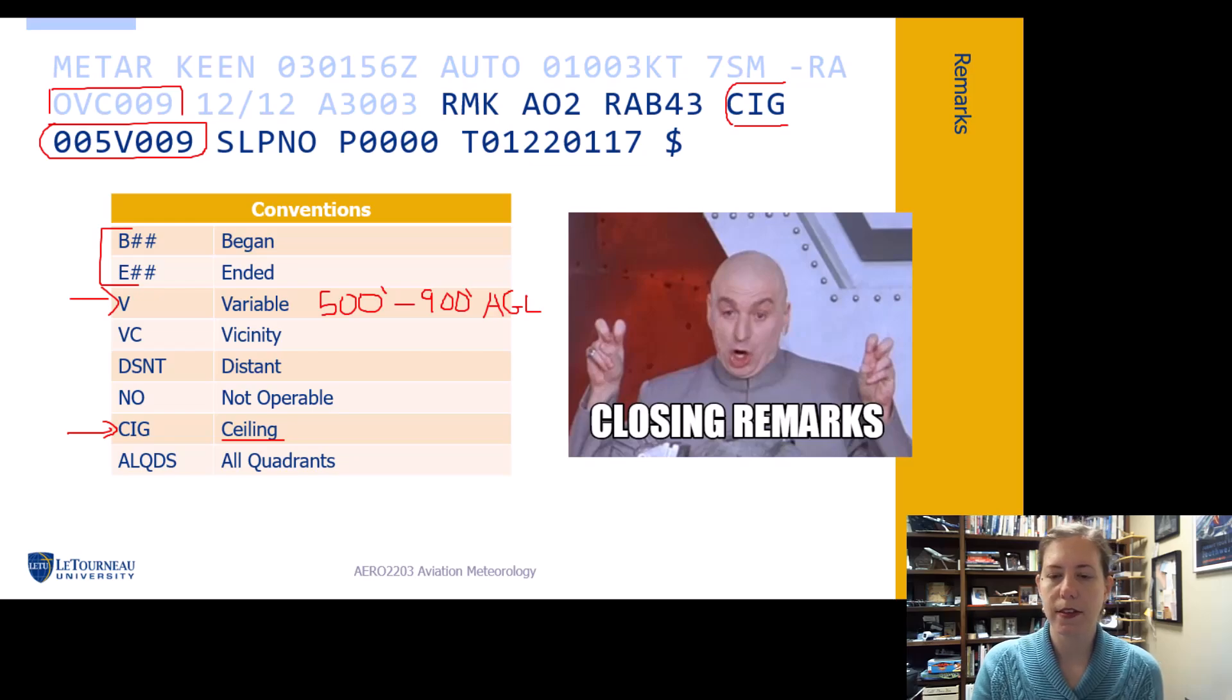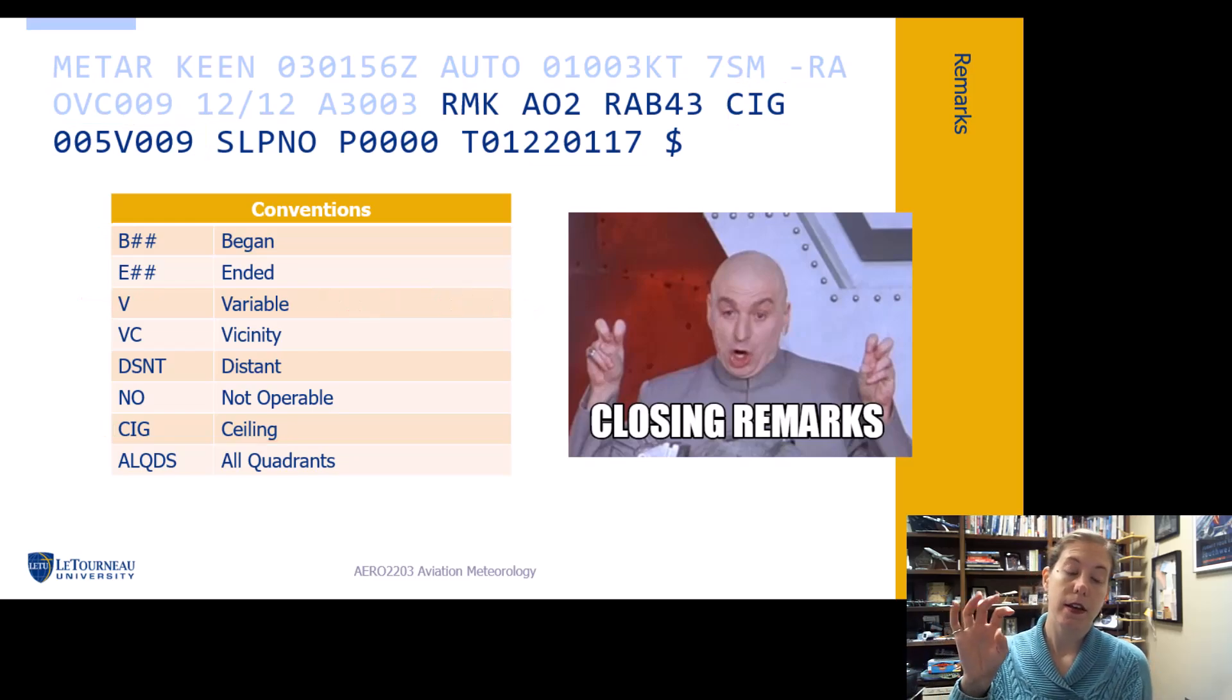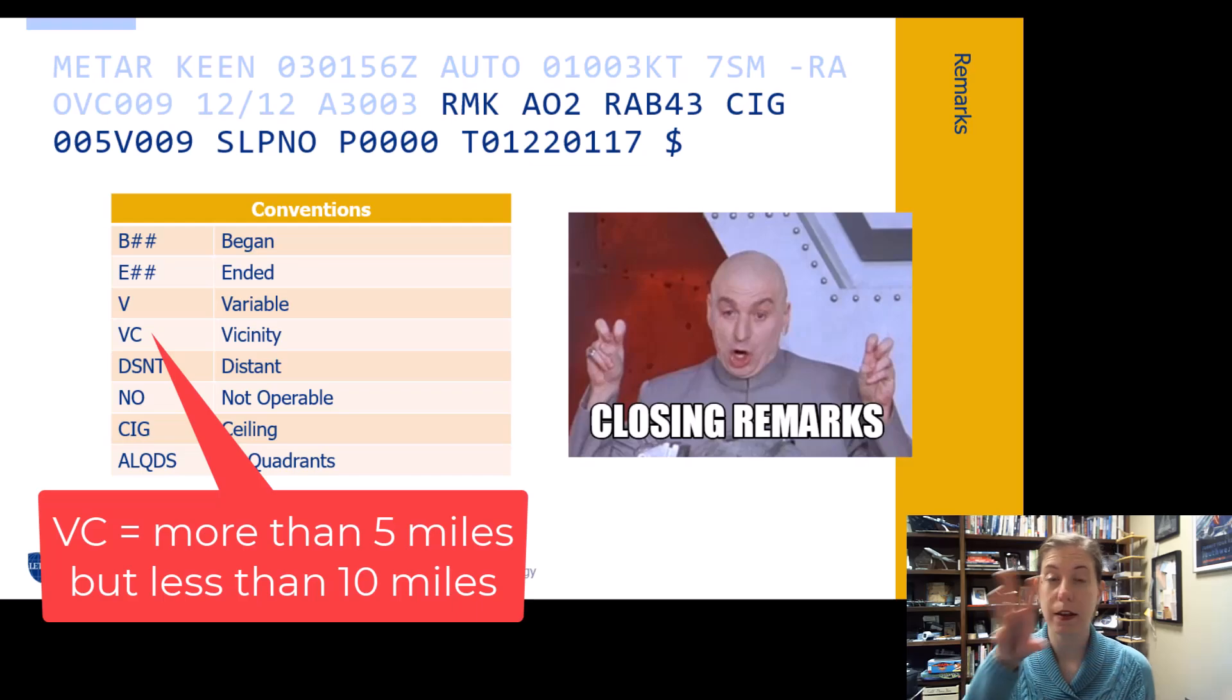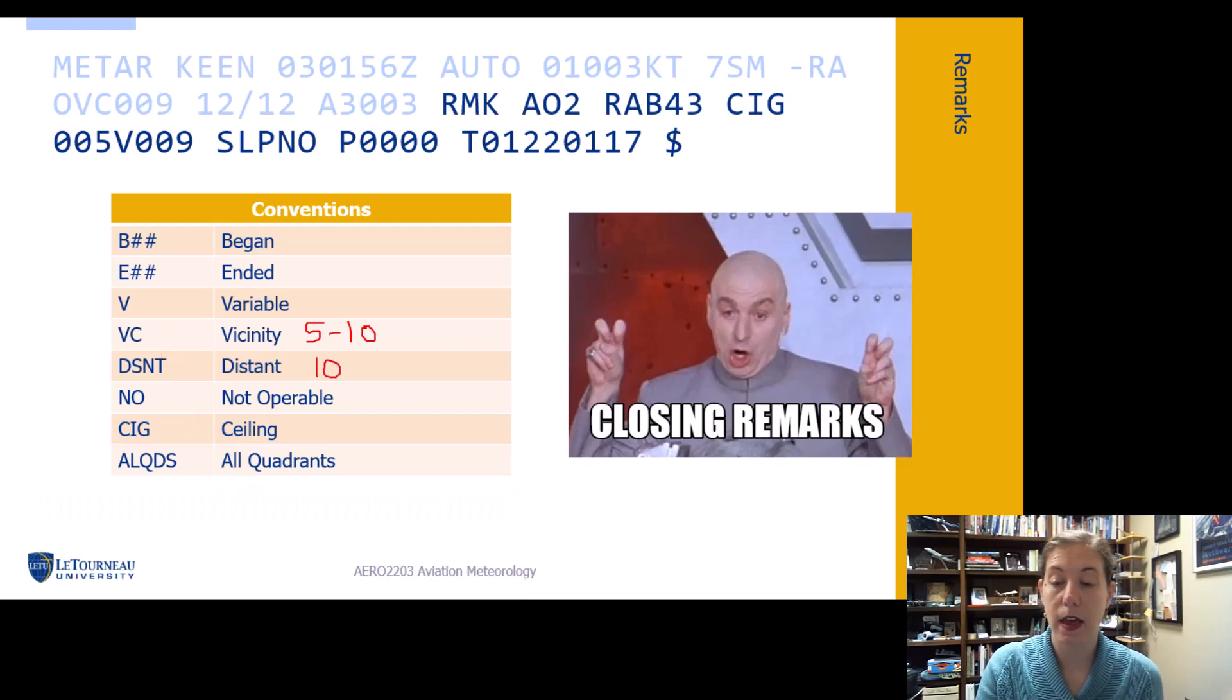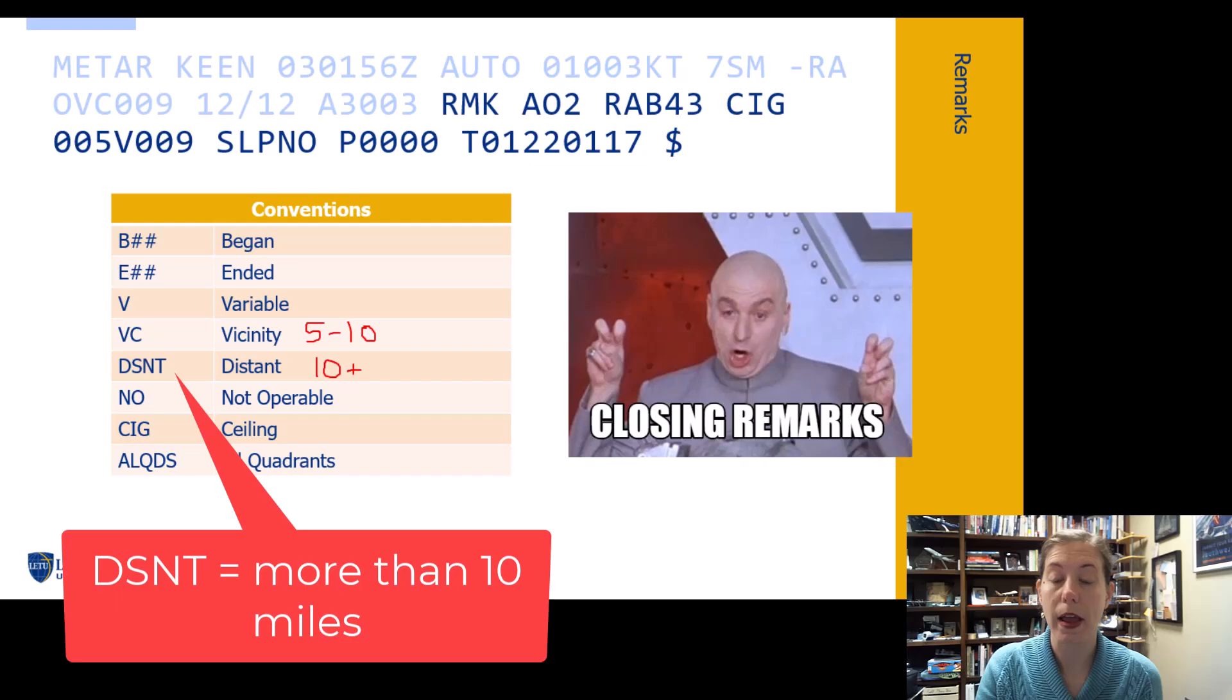Next one we see is vicinity. Sometimes we're going to see vicinity meaning that it is beyond five miles. So if our main body of our METAR is looking at the five mile radius, vicinity means we are five to ten miles from the observation point. And distant is that it's more than ten miles away. We often see distant or vicinity in terms of thunderstorm activity, lightning activity.